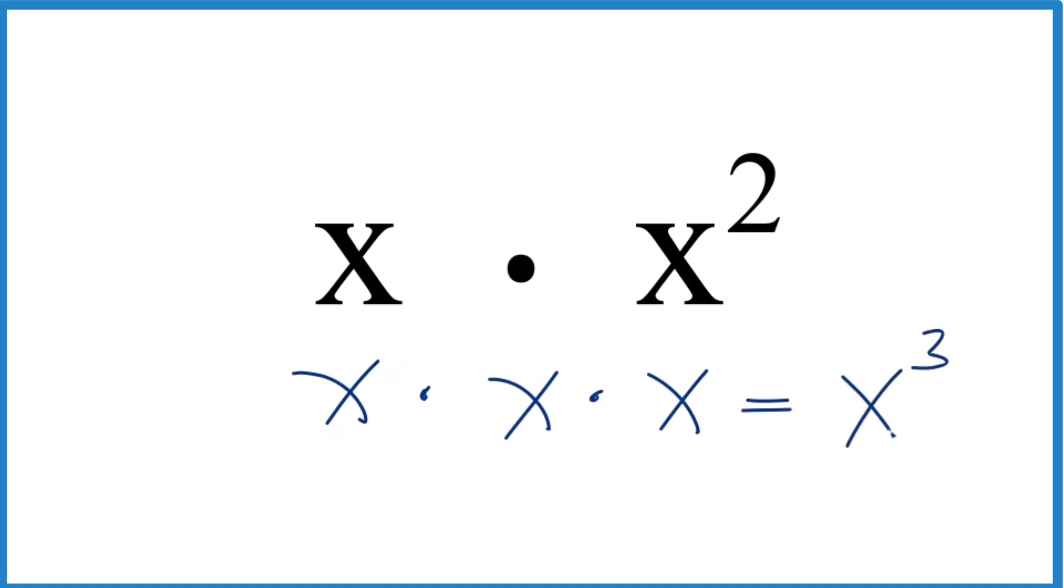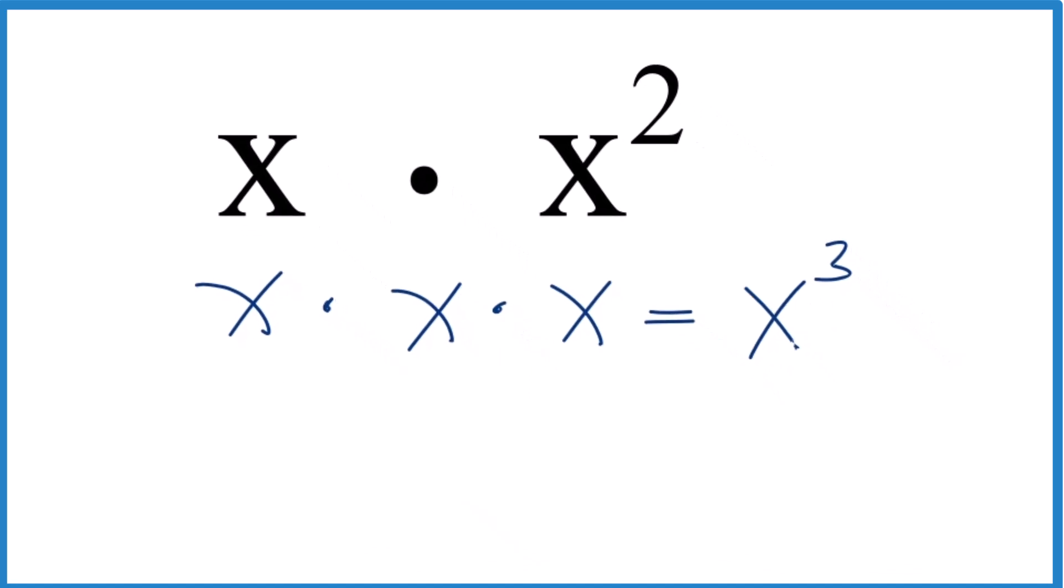The other way you can do this is to think of it this way: x, we could call x to the one, times x to the second. Now, because we have x here and here, they're the same, we can just add one plus two. So we get x to the one plus two, and that equals x to the third.